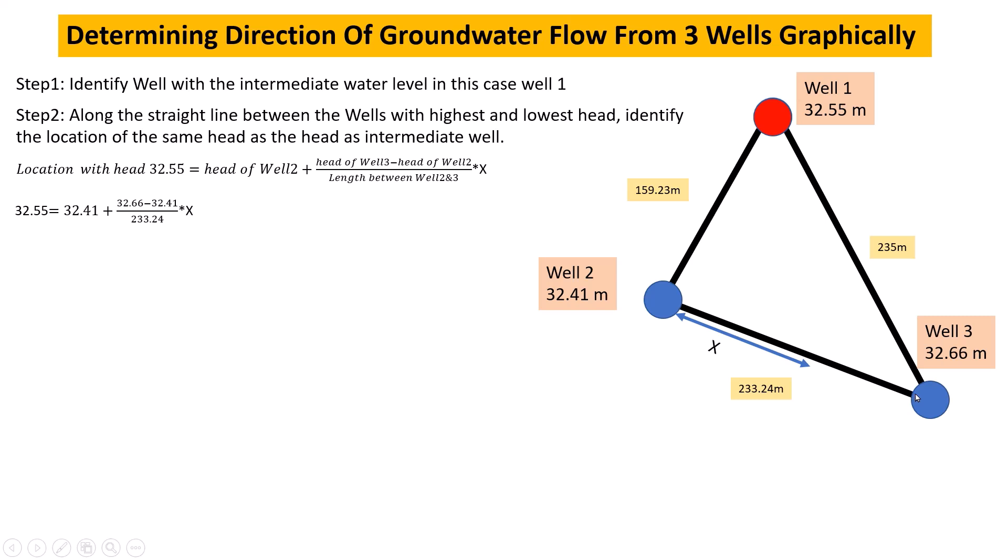So 32.55 equals 32.41 plus (32.66 minus 32.41) over the length times x. This simplifies to 1.07185 times 10 to the power of minus 3 times x.